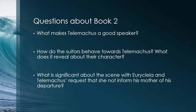Some questions to consider about book two: What do we see about Telemachus as a public speaker — what makes him a good speaker? How do the suitors behave towards Telemachus and what does it reveal about their character? And what do you make of the scene between Telemachus and Eurycleia, the old maid servant who begs him not to leave, and Telemachus's request that she not tell his mother? Why is this domestic, intimate moment perhaps surprising in an epic poem about heroes and gods?